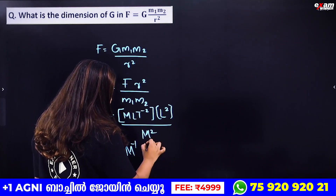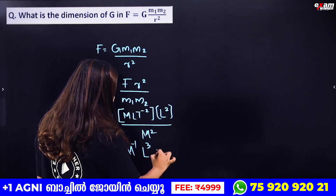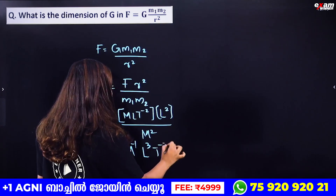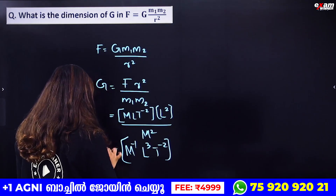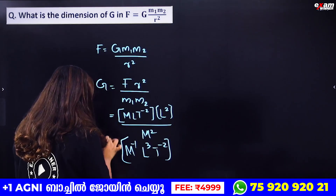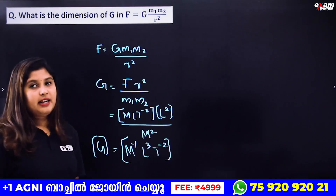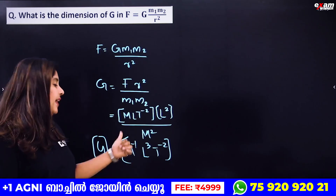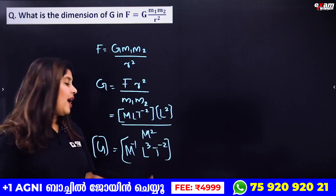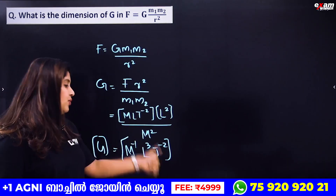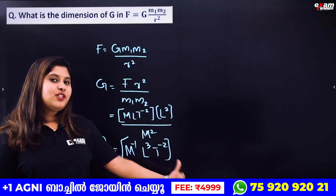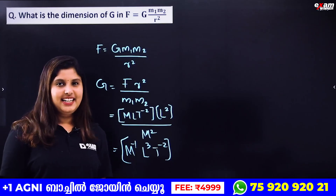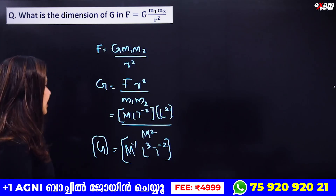Combining everything: G has dimension M⁻¹ L³ T⁻². That is L raised to 3 and T raised to minus 2, M raised to minus 1. Clear and simple.